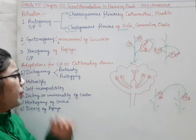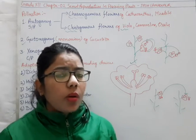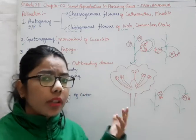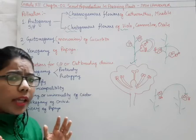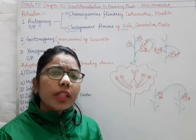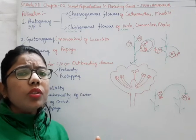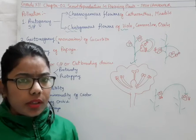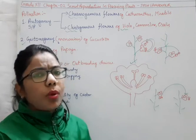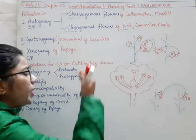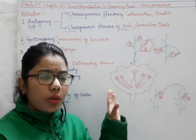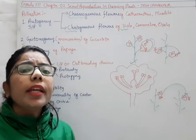Now comes adaptation for cross-pollination. As I said, nature selects and prefers cross-pollination for improvement. Sometimes the condition can be such that it will ensure self-pollination, like we have done in the case of cleistogamous flowers. So what can be the devices by which we can prevent self-pollination? Nature decides how to prevent self-pollination and ensure cross-pollination. These are called the outbreeding devices.